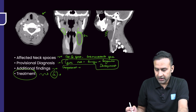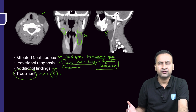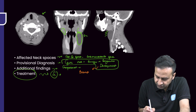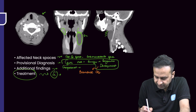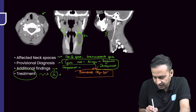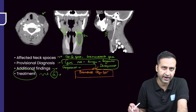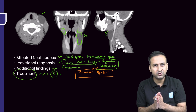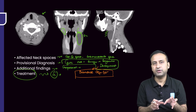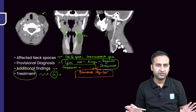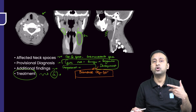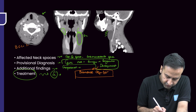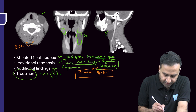Now let's discuss the provisional diagnosis. You may have already come across such cases, and from your knowledge of PG entrance you know there is a thing called a branchial cleft cyst. We gave branchial cleft cyst as our primary differential, and the patient got operated on — it was confirmed. I want you to keep a pictographic memory of what a branchial cleft cyst looks like. You should also know how to classify branchial cleft anomalies — they are typically first to fourth, and all have different locations.